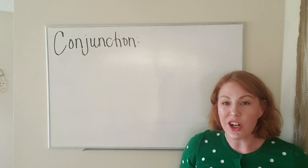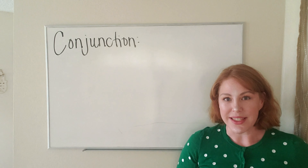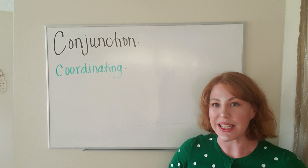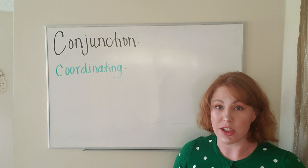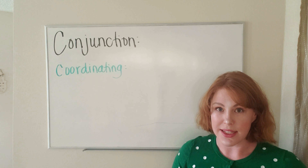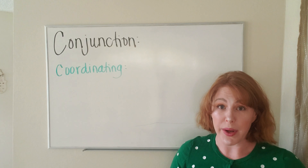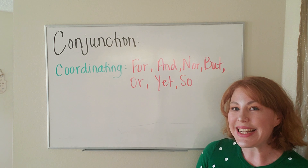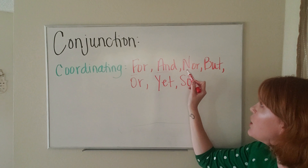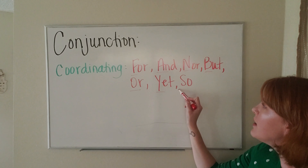Our next part of speech is called a conjunction. Conjunctions join words, phrases, and clauses in a sentence. The first type of conjunction is called a coordinating conjunction. These conjunctions join two independent clauses. The best way to remember coordinating conjunctions is FANBOYS — an acronym for: for, and, nor, but, or, yet, so.